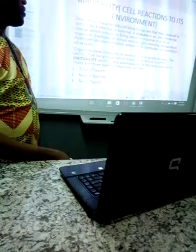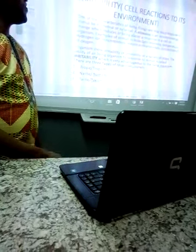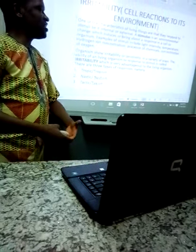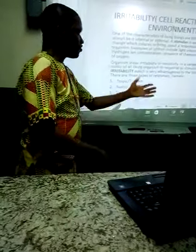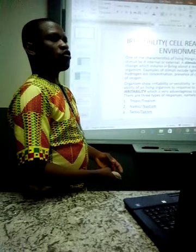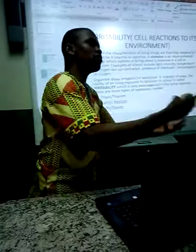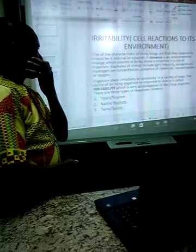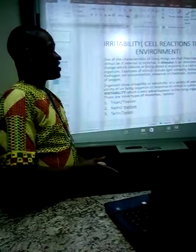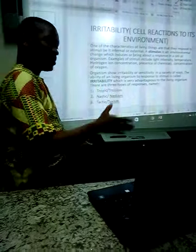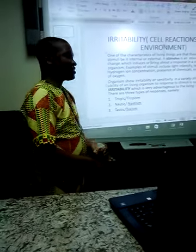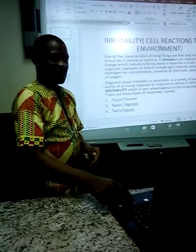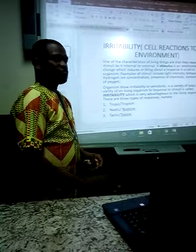Organisms show irritability or sensitivity in a variety of ways. The ability of living organisms to respond to stimuli is called irritability, and this is very advantageous to the living organism. We have three types: tropism, nasticism, and taxism.